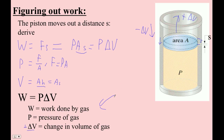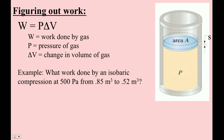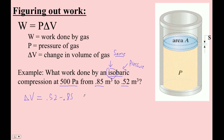Another way to look at these problems — let me just do an example. Work done by an isobaric process. Isobaric: iso means same, and baric means pressure — like barometer, barometers measure pressure. So the pressure stays constant at 500 pascals, and we go from 0.85 to 0.52 cubic meters. So my change in volume is 0.52 minus 0.85 — it's always final minus initial — so it's negative 0.33 cubic meters.